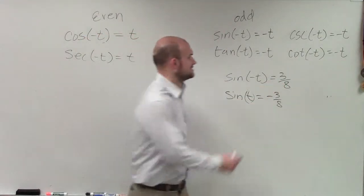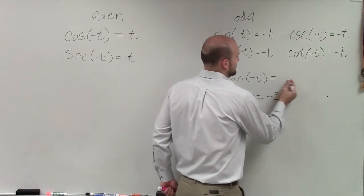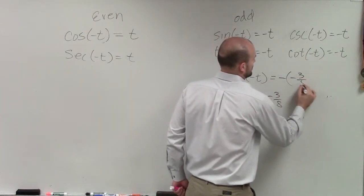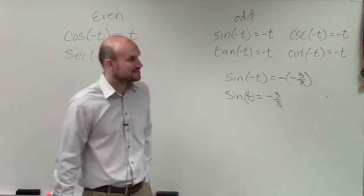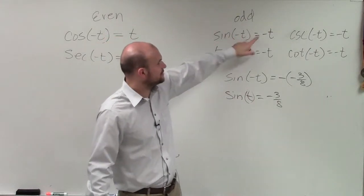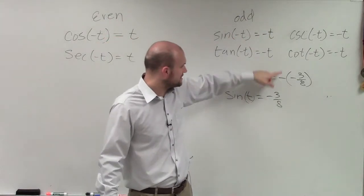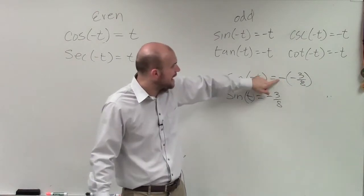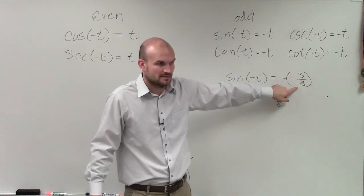So that means you can rewrite it like this. It's negative 3/8, right? Sine of negative t equals negative t. That means t is negative 3/8, because it's the opposite of your t.